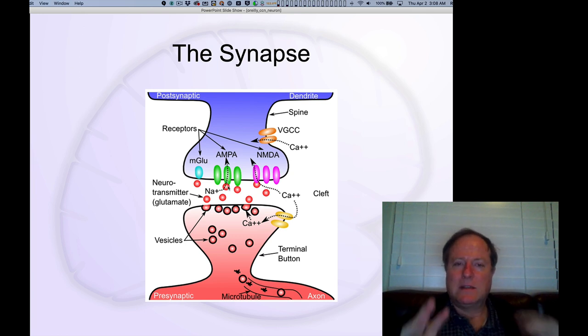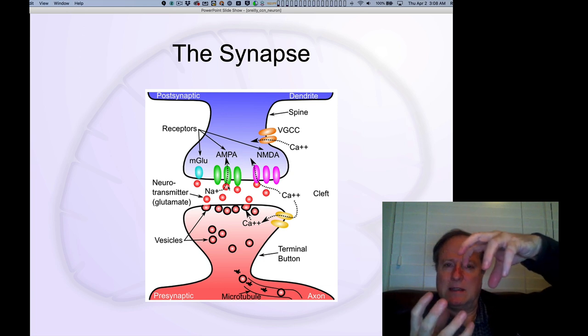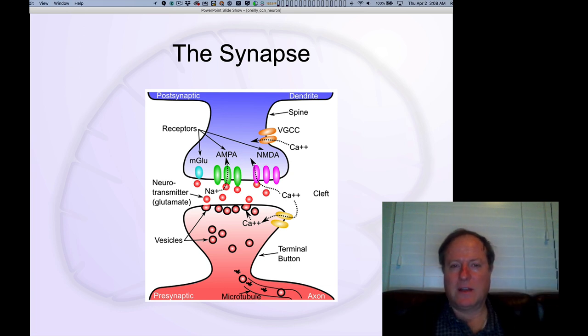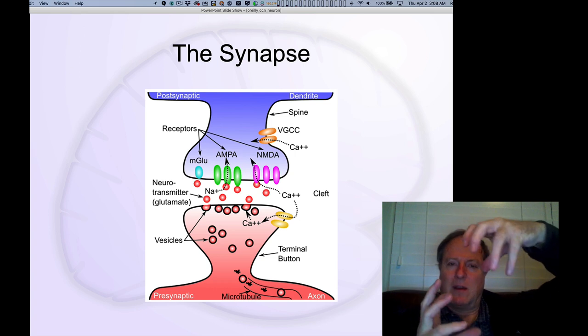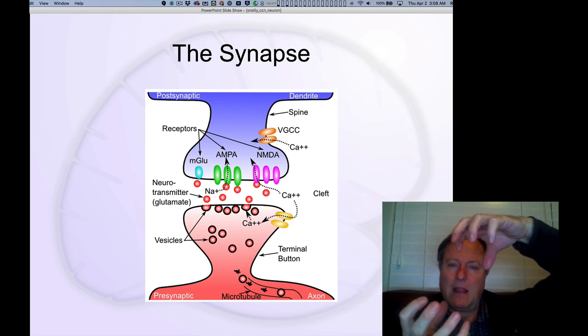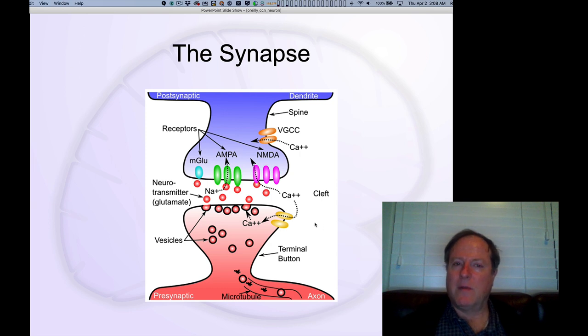It causes these receptors to twist. And this is very well understood now, exactly the protein structure of these AMPA receptors. There's different variants of them. But they all have this same characteristic that when the neurotransmitter binds to them, they twist open, and then they can twist back closed. And when they twist open, they allow sodium ions preferentially but not exclusively to enter the postsynaptic cell.